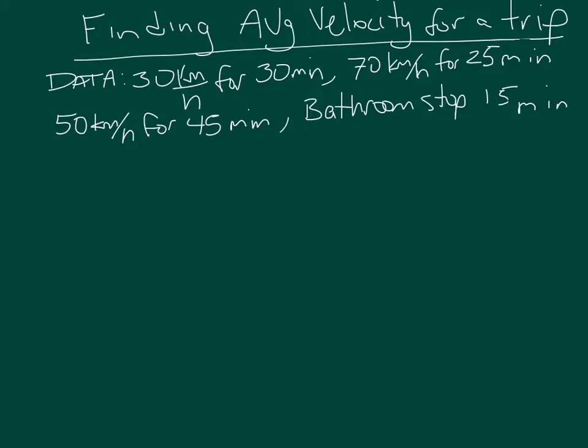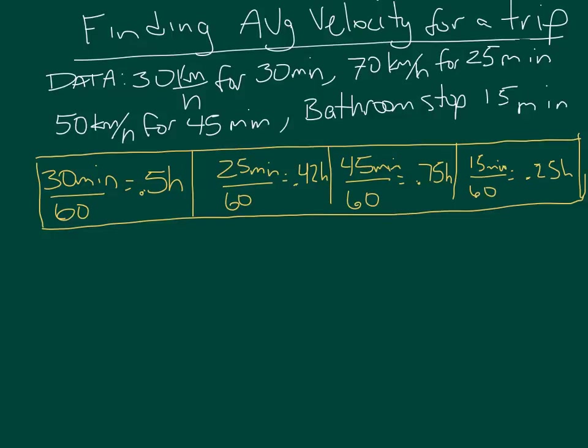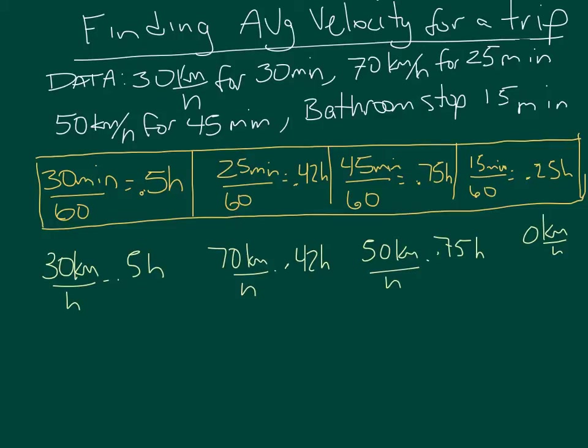What I've done here is converted each of the times into hours. So I've got 30 minutes divided by 60 is half an hour, 25 minutes divided by 60 is 0.42 hours, 45 minutes is 0.75 hours, and 15 minutes is 0.25 hours.